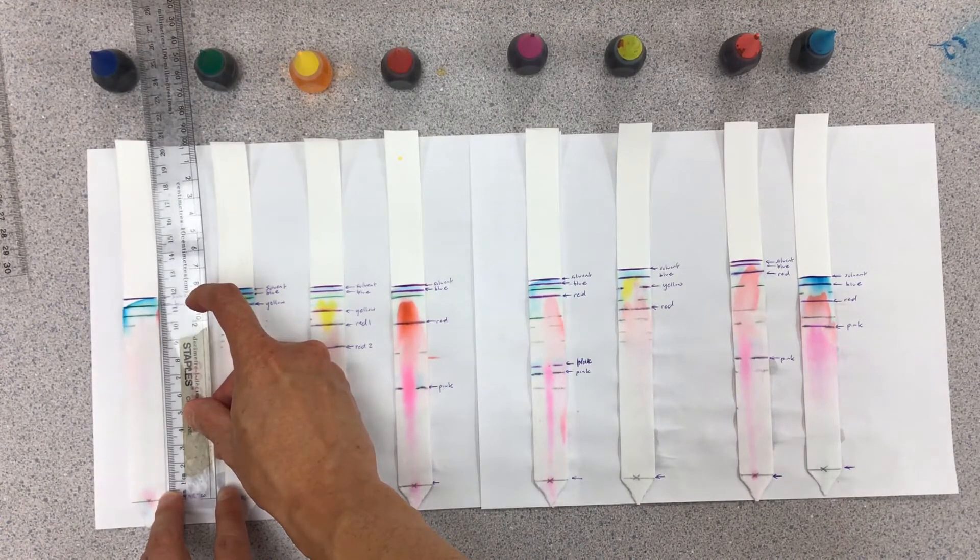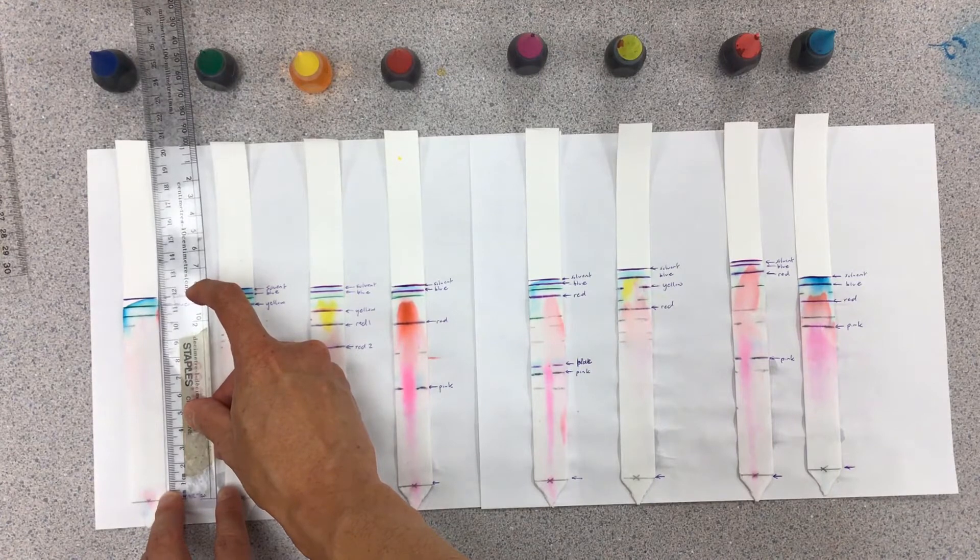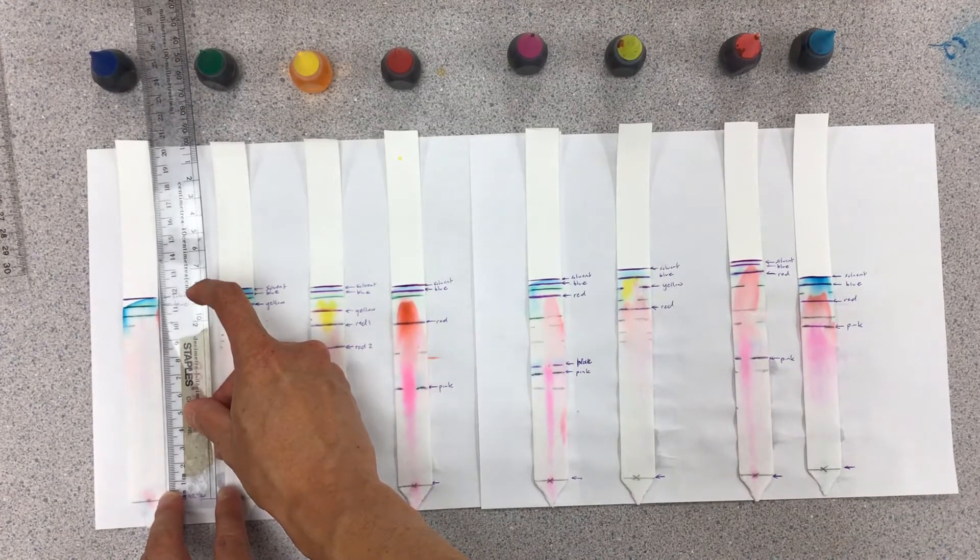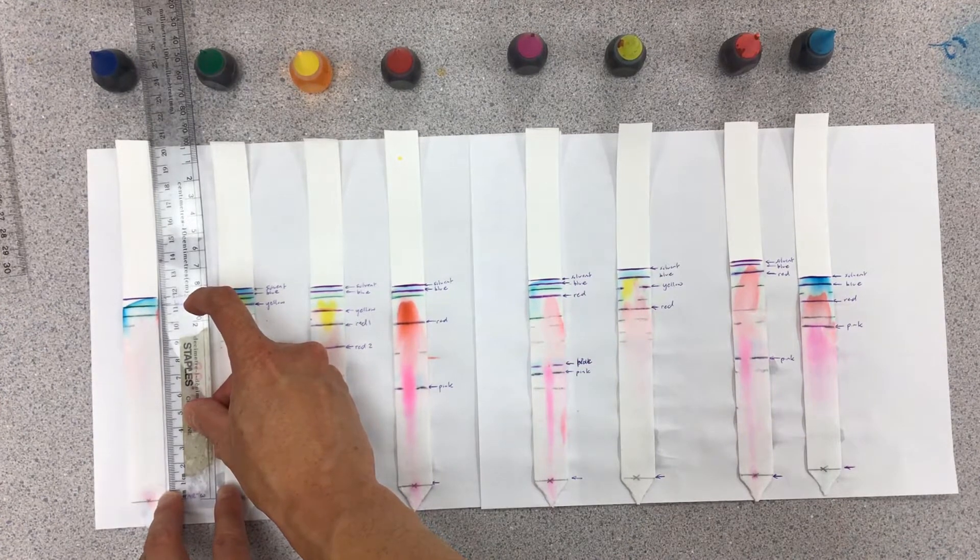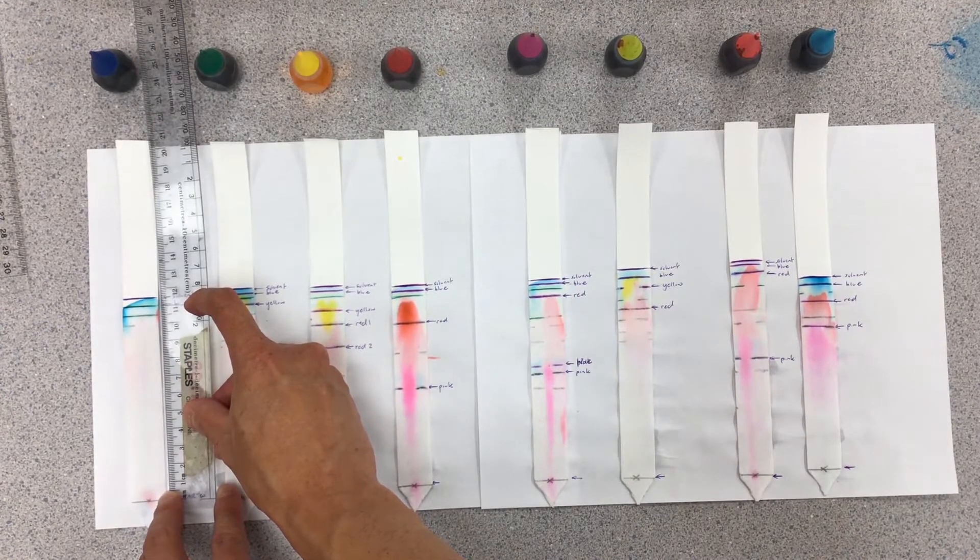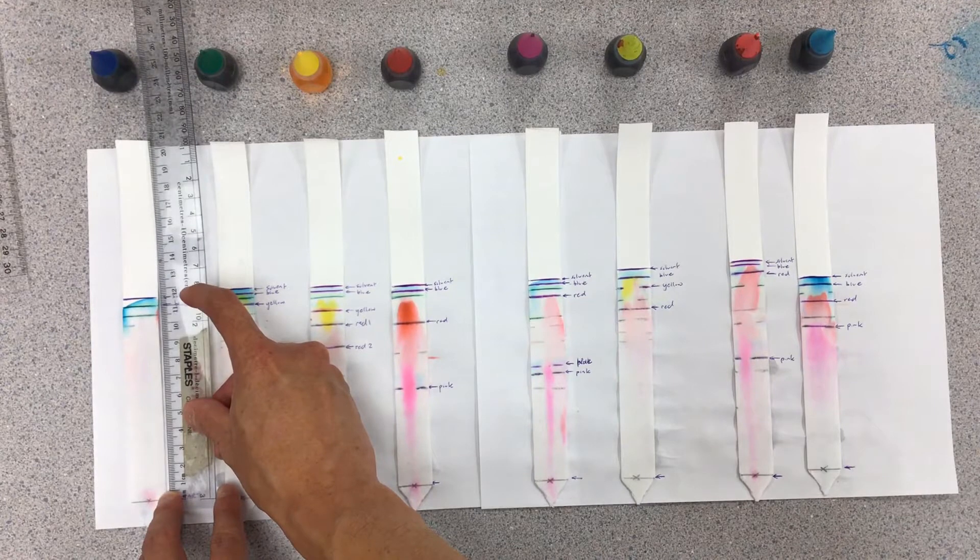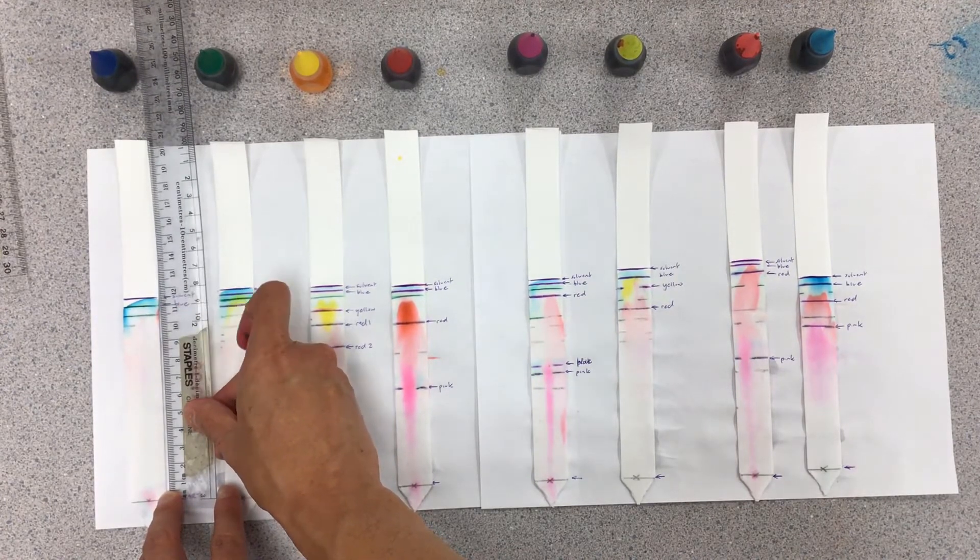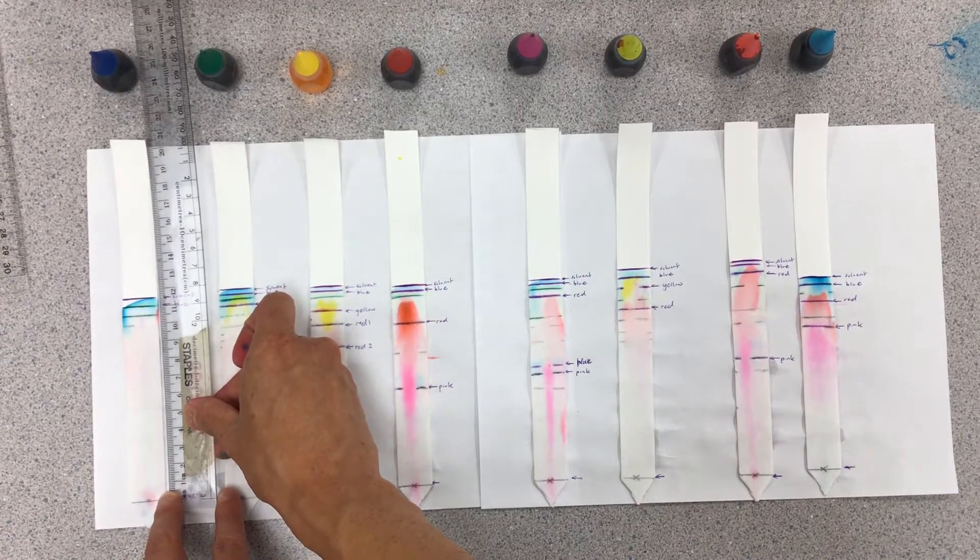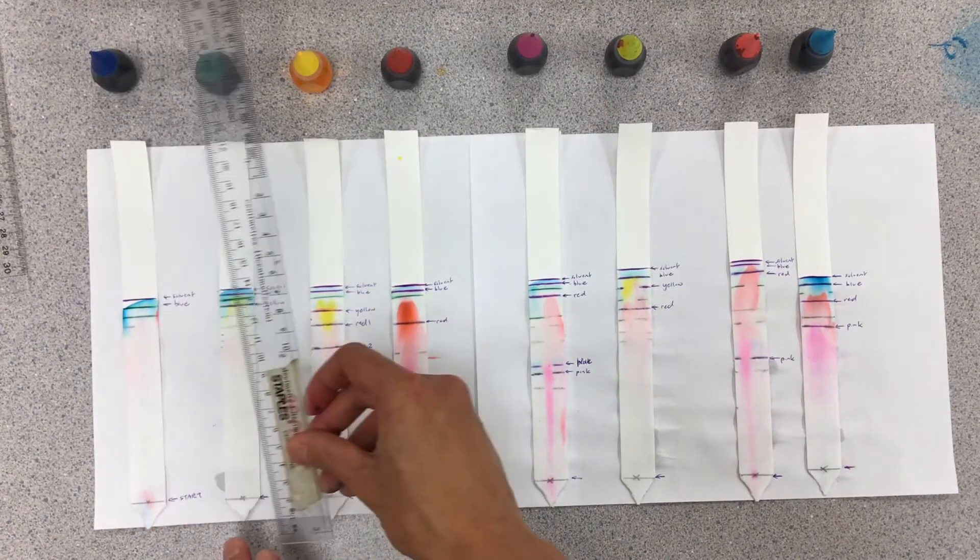For example, our blue here would be 11 centimeters divided by 11.5. That's going to give you a ratio called an RF value, a ratio of fronts. That is an intensive value, so you can actually compare the RF value to a known table and see if you can identify which dye this is.